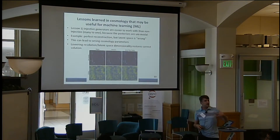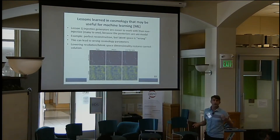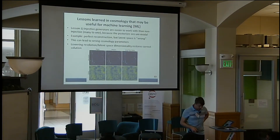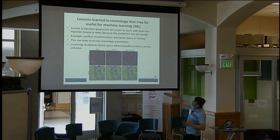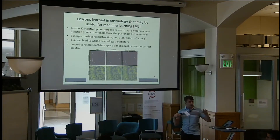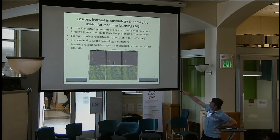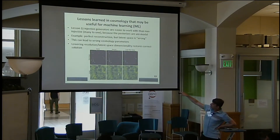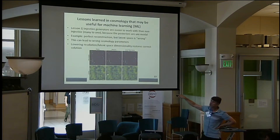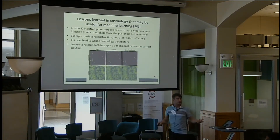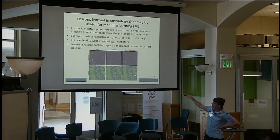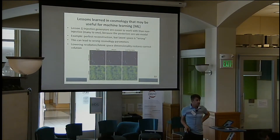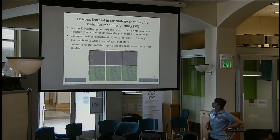Here are a few lessons we've learned that might be useful for machine learning. Lesson one: injective forward models are much easier to work with than non-injective ones. Non-injective means many-to-one. When we go to very high-resolution data, our reconstruction looks perfect in data space, but the latent space reconstruction doesn't have perfect agreement, because the forward model mapping is non-injective. If we downsample the resolution, we get better agreement at least on the coarse-grained scale. So injectivity is important to keep in mind for forward models or generators.